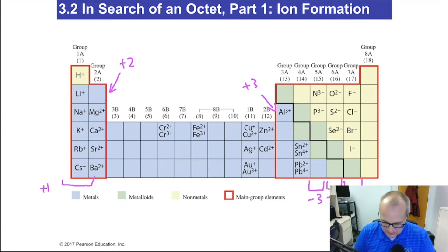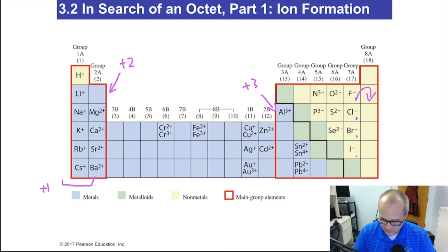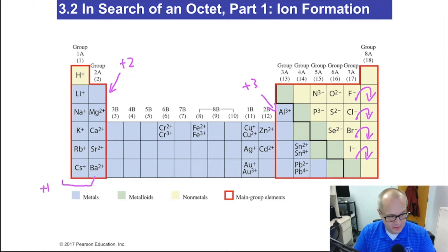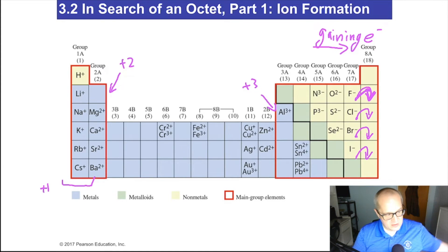Here's a quick and easy way to remember this — just count the squares to get to the noble gas on the periodic table. If you're in group 17, you jump one spot to get to the noble gas — that's gaining one electron, so that's negative 1. Going to the right means you're gaining electrons, and if you're gaining electrons, you are negative.